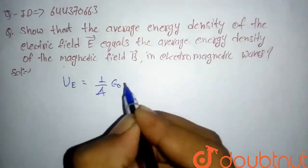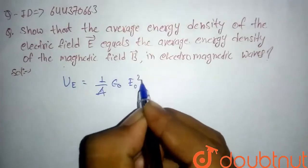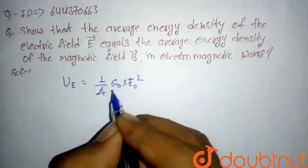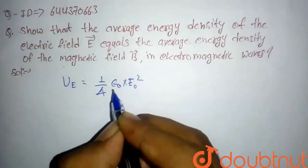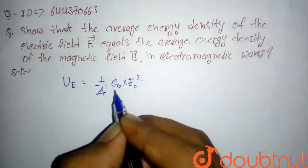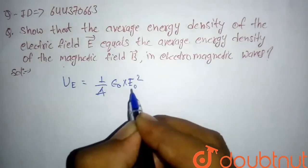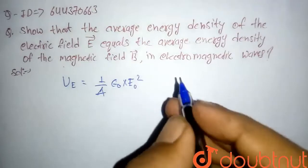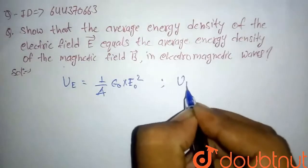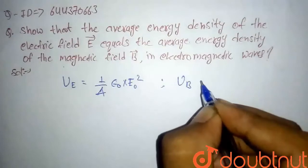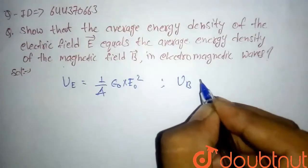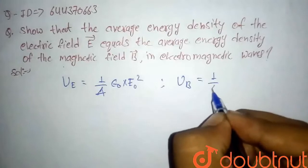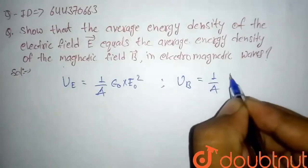...epsilon naught E₀ squared. Here epsilon naught is the electric permittivity and E₀ is the maximum value of the electric field.